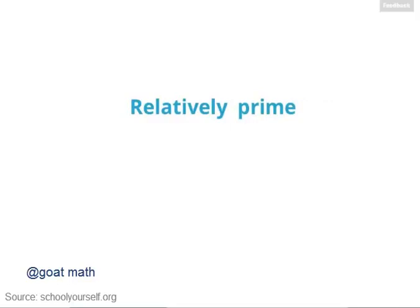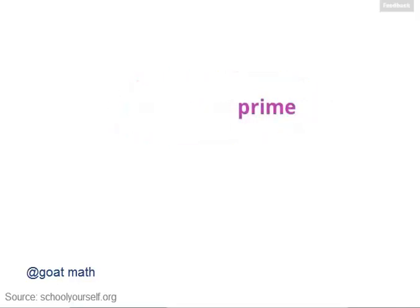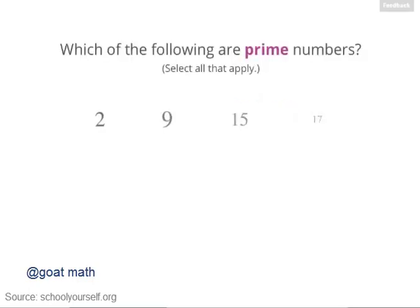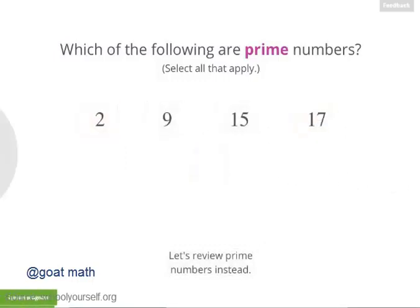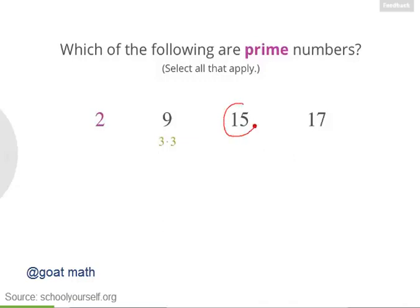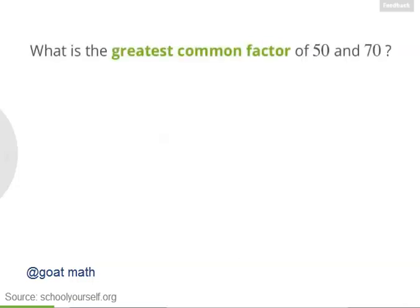Here we'll talk about what it means for numbers to be relatively prime. But first, let's make sure you know about prime numbers. Of the four numbers here, which are prime? Exactly. 2 is the smallest prime number. 9 is not prime — meaning it's composite — because 3 is one of its factors. 15 is also composite because it has factors of 3 and 5. And 17 was the other prime number here.